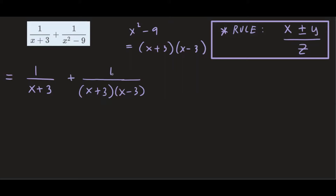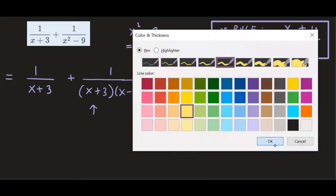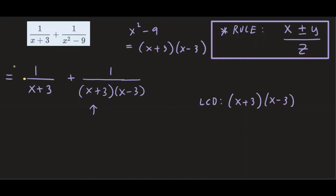Now we can look for the lowest common denominator — LCD — to combine these two fractions. The LCD that works for both fractions is x plus 3 from the first fraction. From the second fraction, I already have a factor of x plus 3, so all I need is the factor of x minus 3. So the LCD is x plus 3 times x minus 3. Now we look at each fraction and give it what it's missing. Only the first fraction needs something, so we multiply it top and bottom by x minus 3.